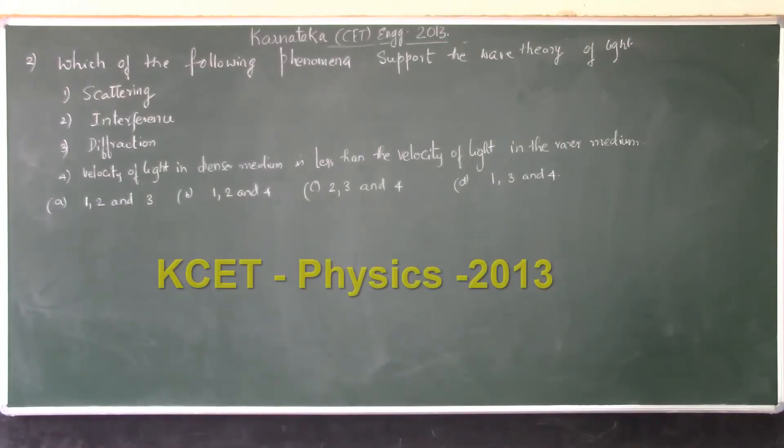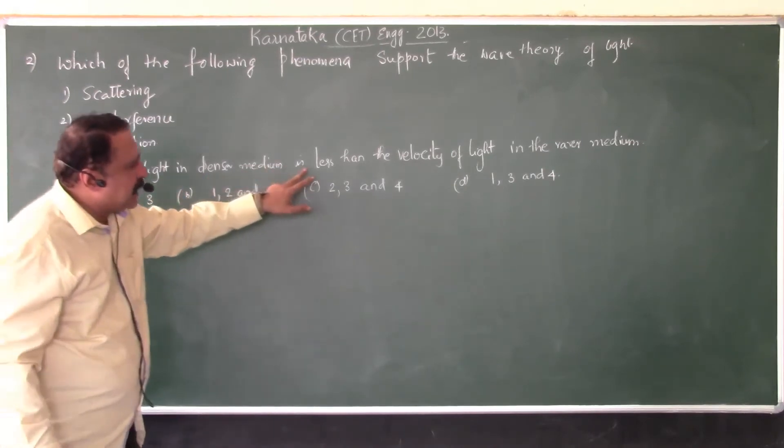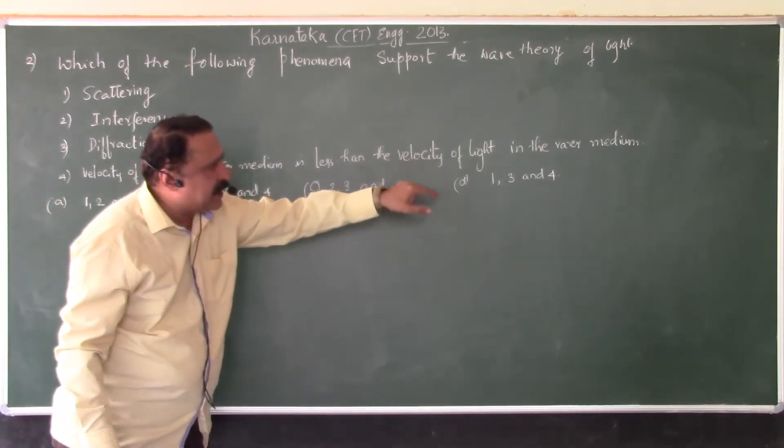Question number 2 of Karnataka CET Engineering Entrance 2013. Which of the following phenomena support the wave theory of light? Scattering, interference, diffraction, velocity of light in denser medium is less than the velocity of light in the rarer medium.